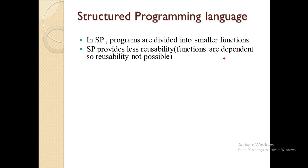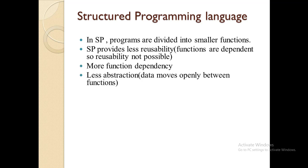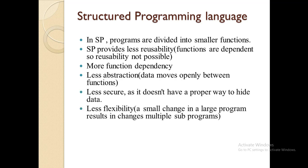If we use function A in another part of the code, we also have to make changes to all the other dependent modules and functions. Resultantly, there is more function dependency. Structured programming also provides less abstraction because the data and complexity are never hidden from a simple user — data moves openly between functions. That's why the data is less secure, as functions can easily change the data from one form to another, and there is no proper way to hide data.